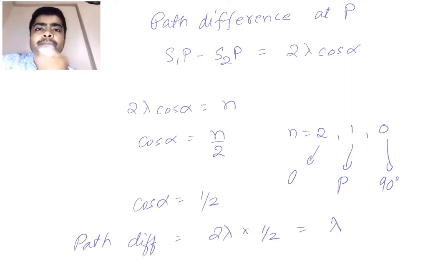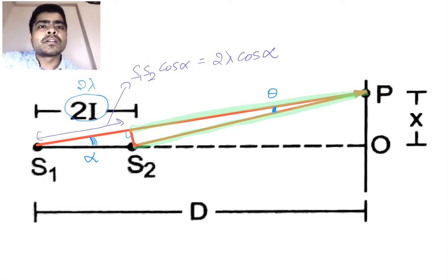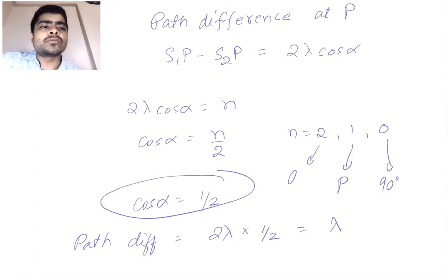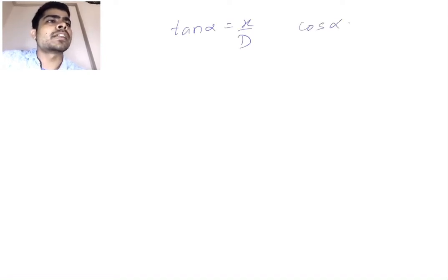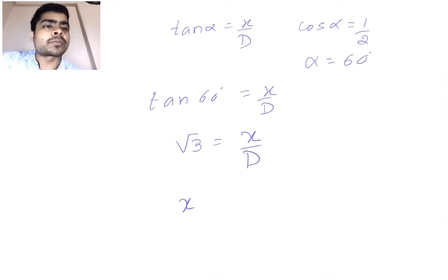The path difference at P is 2 lambda times 1/2, which equals lambda. Now looking at triangle S1PO, tan alpha equals x divided by D. With cos alpha = 1/2, alpha = 60 degrees. So tan alpha = tan 60° = √3 = x/D. Therefore, x equals D times root 3, and that is the final answer.